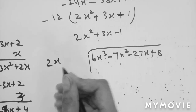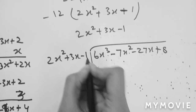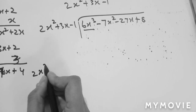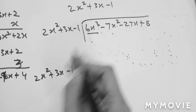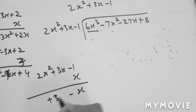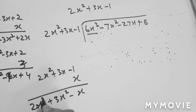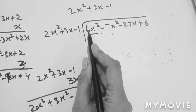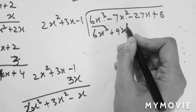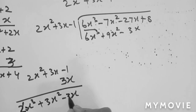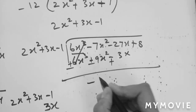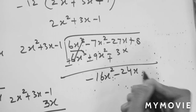We write q(x) on the inside and 2x² + 3x - 1 on the outside. We need to make 6x³ from 2x². We multiply 2x² + 3x - 1 by 3x: 2x² times 3x = 6x³; 3 times 3x = 9x²; minus 1 times 3x = minus 3x. So we get 6x³ + 9x² - 3x. Now we subtract: plus becomes minus, minus becomes plus. The answer is minus 16x² - 24x + 8.